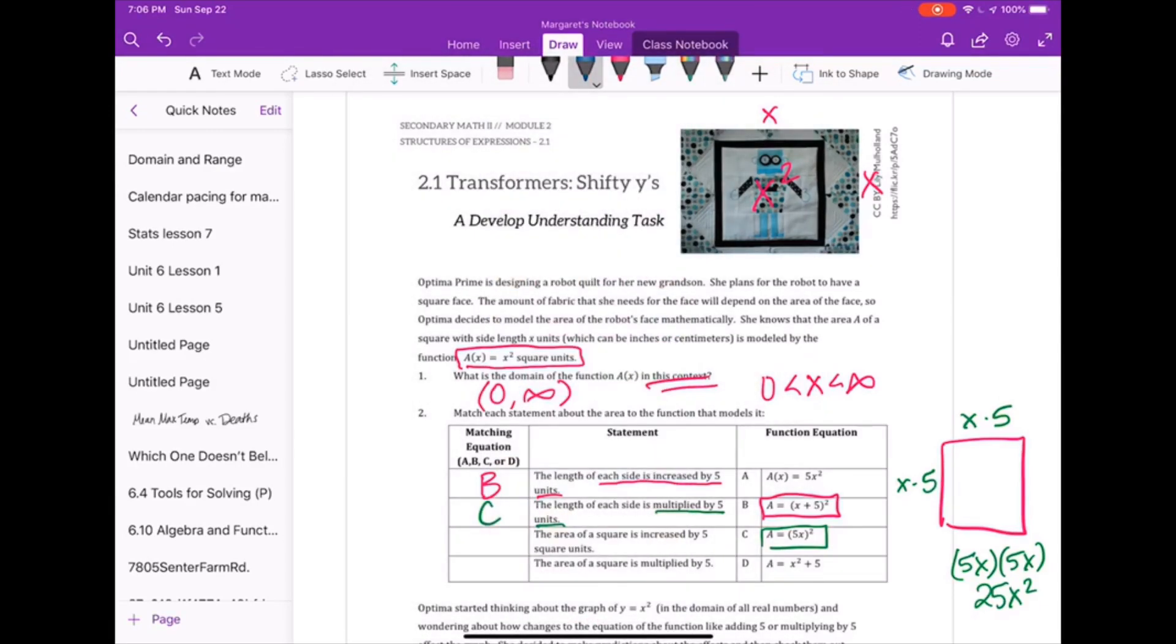Then, if we are looking at the third choice, we see that the area of the square is increased by 5 units. So before, we were looking at lengths of the square, and now we are looking at the area of the square. So our original area of the square was x squared, and that is being increased by 5 units, which means that we are adding 5 units to x squared. And you can find that easily here in D.